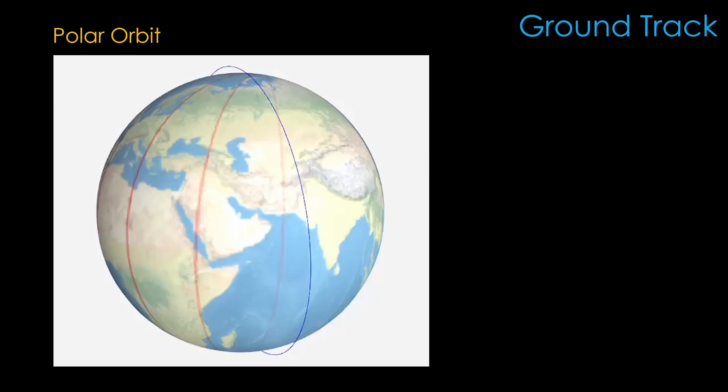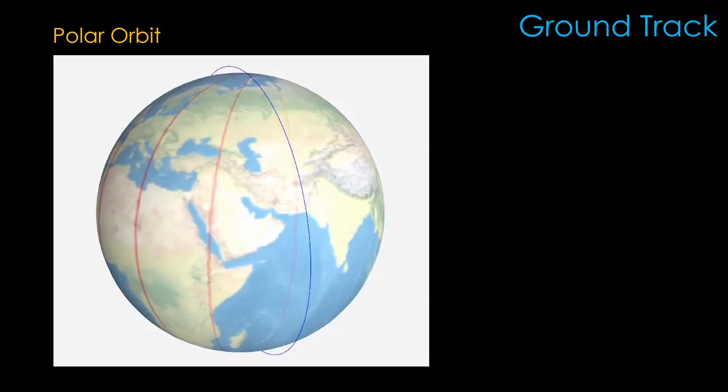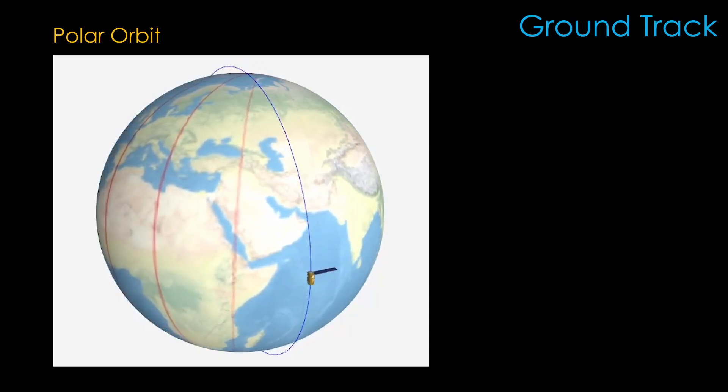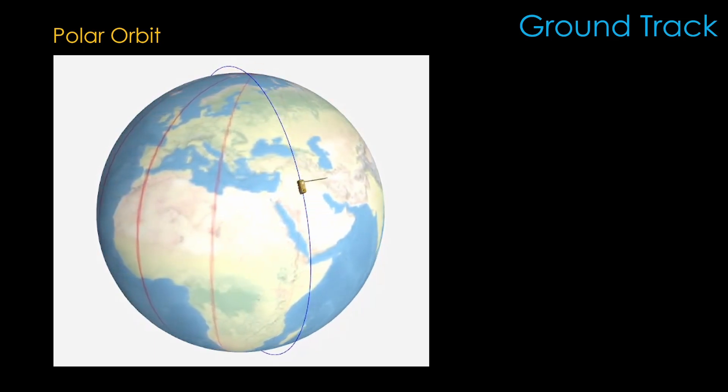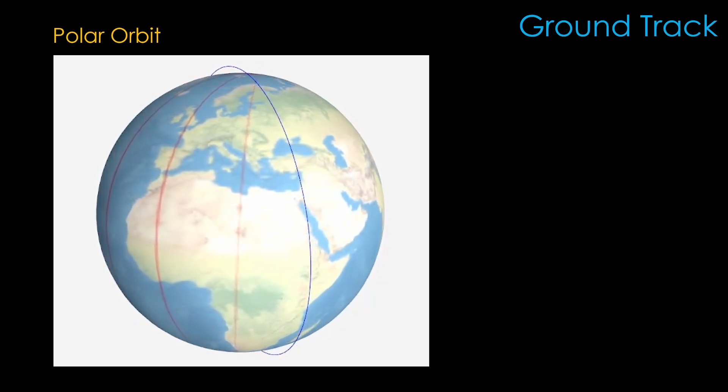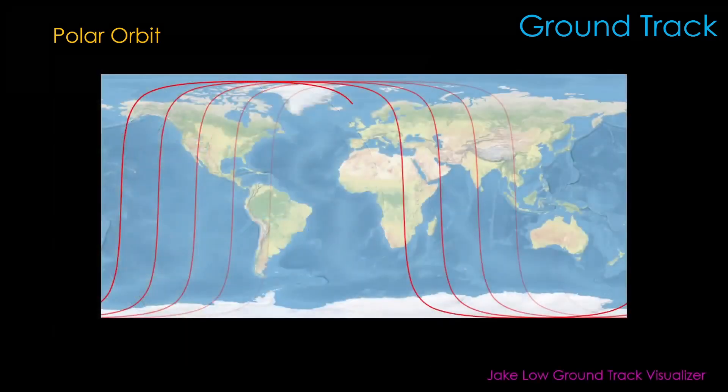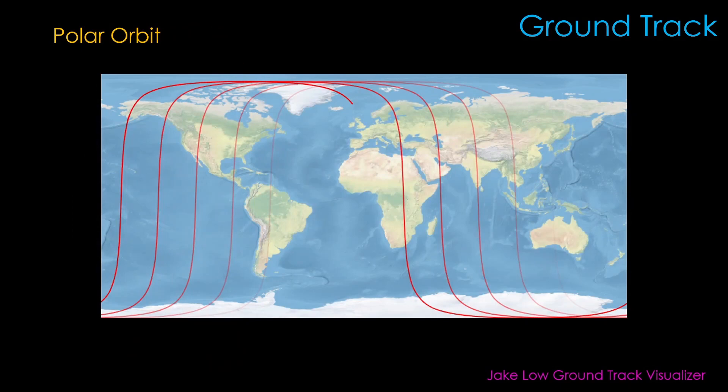For Earth observation, we want an orbit that covers most of the Earth's surface, and that is a polar orbit. The Earth slowly spins underneath the satellite, and each orbit covers a different path over the Earth's surface. That leads to a ground track that looks like this. Both the animation and this ground track were created by Jake Lowe's excellent ground track visualizer.